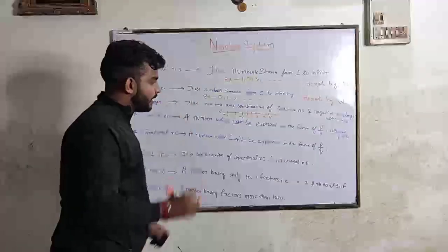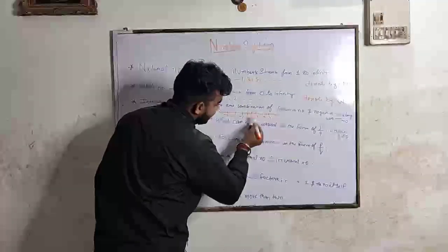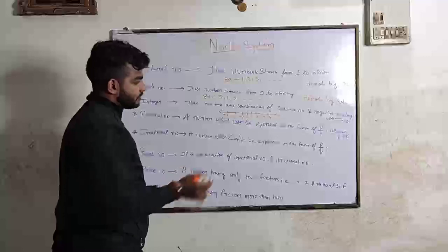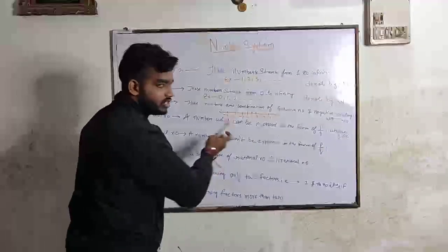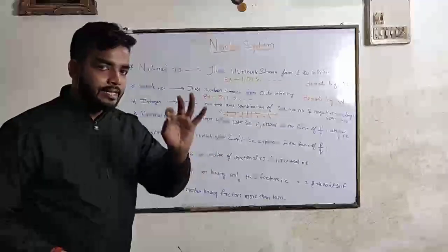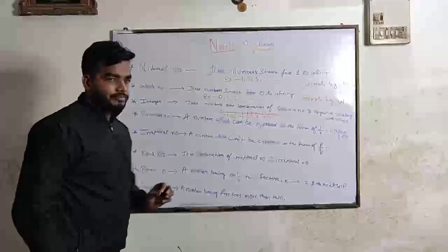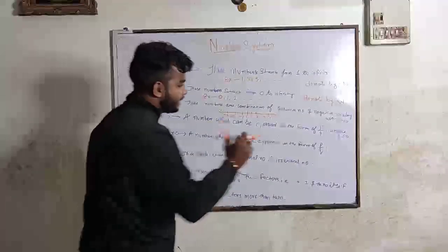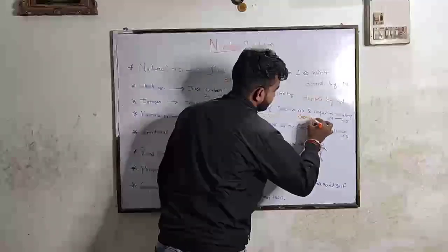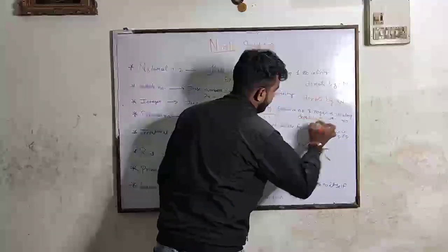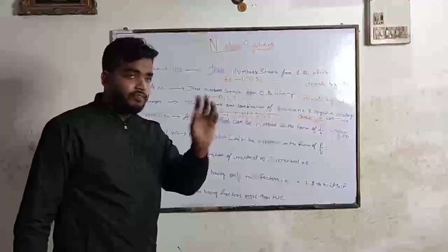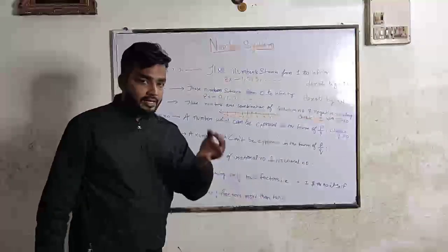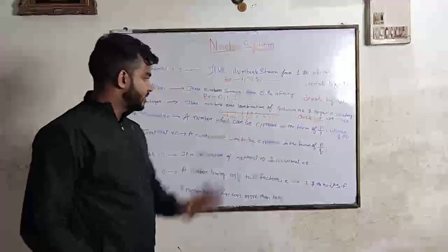And right side positive. Now always remember one thing: left number is smaller. Which is the 0 or minus 1, which one is greater? 0 is the greater. Left side is greater. Integer we denoted by Z, capital Z. The smallest integer is negative infinite and the largest integer is positive infinite.